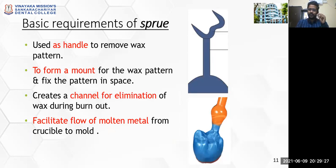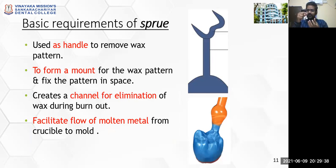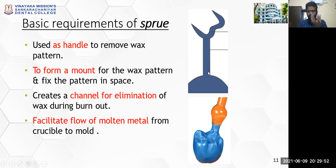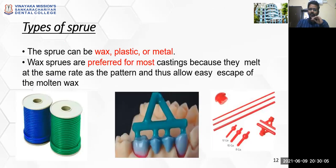The basic requirements of a sprue: it is used as a handle to remove the wax pattern — once your wax pattern is made, using the sprue you can easily remove it and it will act as a handle for removal. It forms a mount for the wax pattern so you can easily fix it over the crucible former in your casting assembly. It creates a channel for elimination of wax during burnout and facilitates the flow of molten metal into the mold.